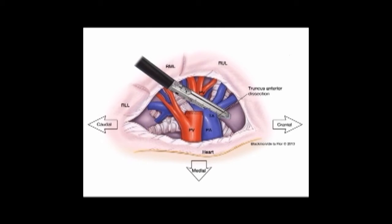For a video-assisted thoracoscopic right upper lobectomy, the second structure divided is the truncus anterior branch of the right upper lobe pulmonary artery. Once the pulmonary vein branches to the right upper lobe have been divided, this is the next vascular structure you should encounter. The truncus anterior branch of the pulmonary artery should be dissected free and separate from the basilar branch. Be sure that you are only encircling the truncus anterior branches and not the main pulmonary artery, which would require a pneumonectomy. Once dissected around the vessels, pass the stapler around this structure and staple and divide the truncus anterior of the pulmonary artery.